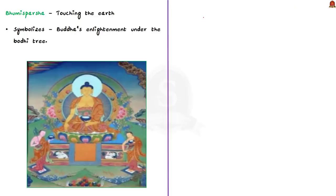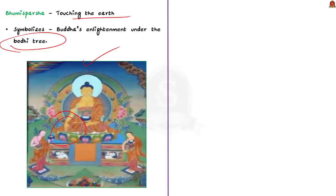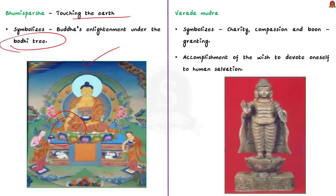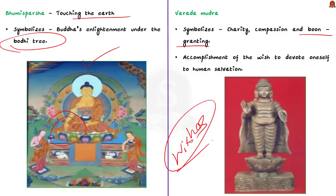The third mudra is Varada Mudra, which symbolizes charity, compassion, and boon granting — the gesture of granting wishes. The fourth is Dhyana Mudra, which has multiple interpretations, but is widely accepted as representing the identification with the mystic fire that consumes all impurities; it also represents the three jewels of Buddhism — Buddha the teacher, Dharma the teaching, and Sangha the community.